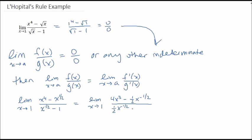That's a simple power rule differentiation. And now we have 4x cubed minus 1 over 2 square root x, all over 1 over 2 square root x.